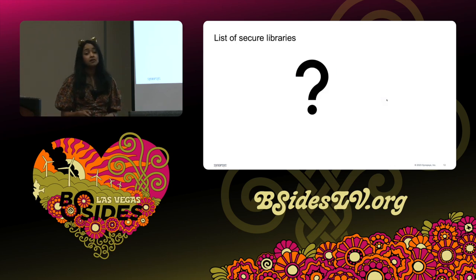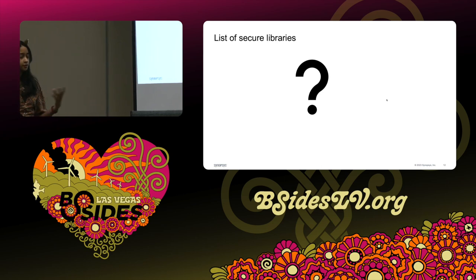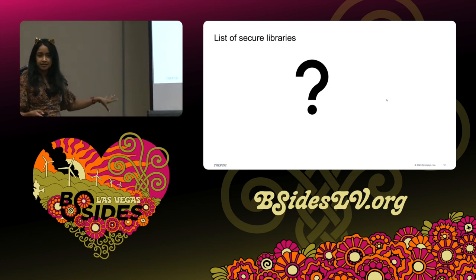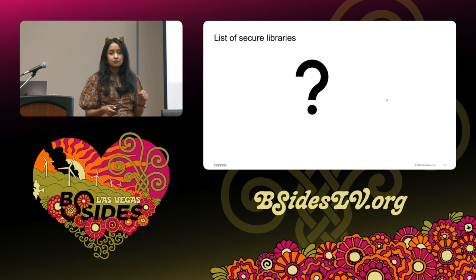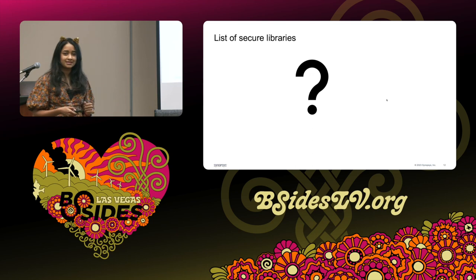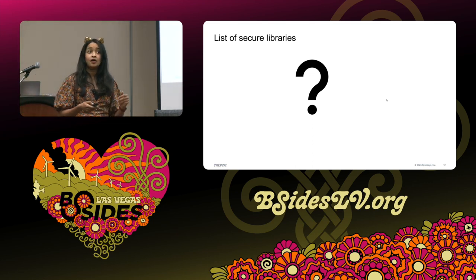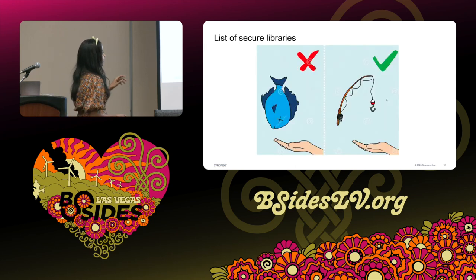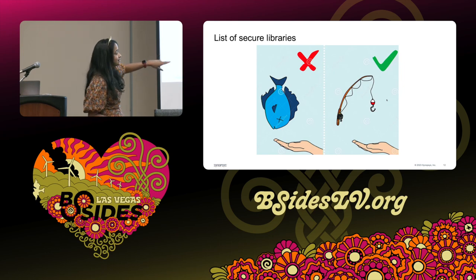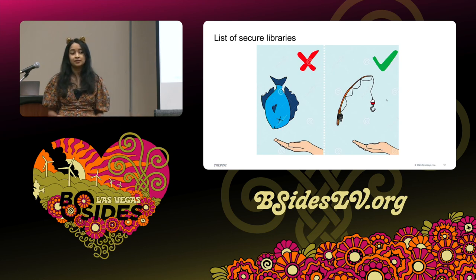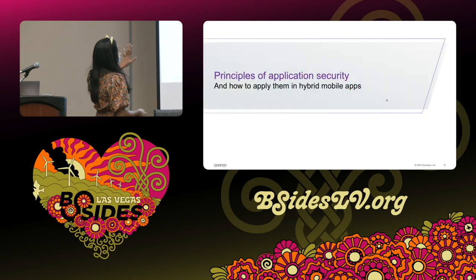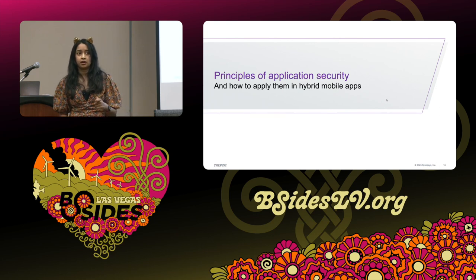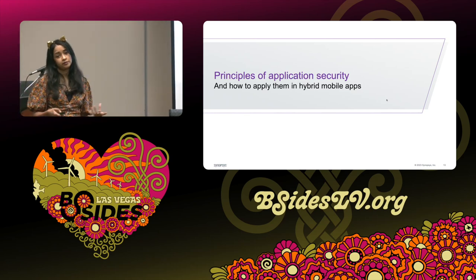Instead of giving you a list of secure libraries — which could become outdated, develop CVEs, or face supply chain issues — let's take an alternate approach. If you give a person a fish they eat once, but if you teach them to fish they eat forever. We'll use five principles of application security to evaluate libraries on our own and apply them whether you're picking libraries or writing hybrid mobile app code from scratch.